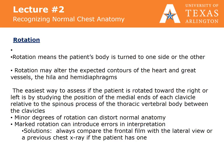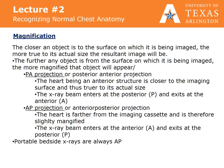A solution is to always compare the frontal film with the lateral view or a previous chest x-ray if the patient has one. The closer an image is to the surface on which it is being imaged, the more true to its actual size in the resultant image. Conversely, the further any object is from the surface on which it is being imaged, the more magnified that object will appear. In a posterior-anterior (PA) projection, the heart being an anterior structure is closer to the imaging surface and thus is truer to its actual size. In an AP projection, the heart is farther from the imaging cassette and is therefore slightly magnified. A good example of this is a portable bedside x-ray.